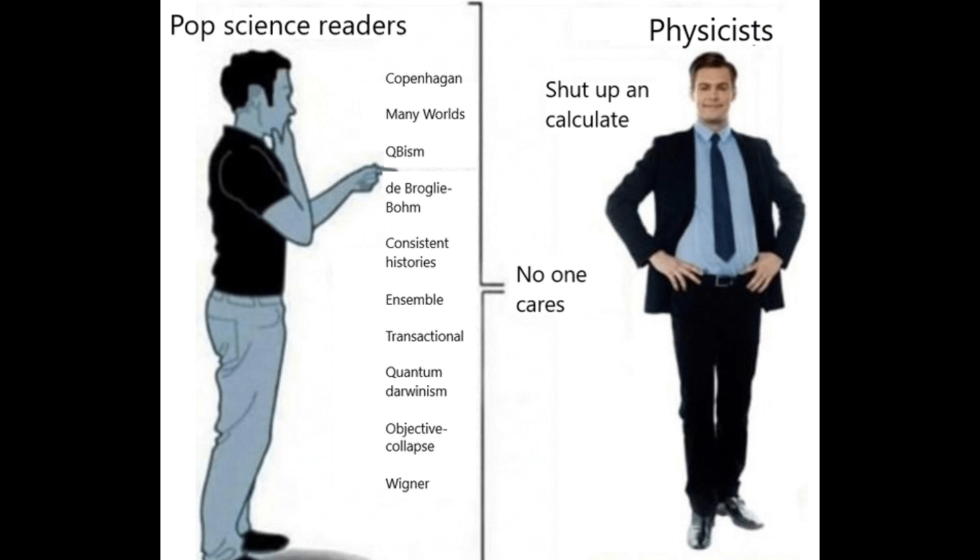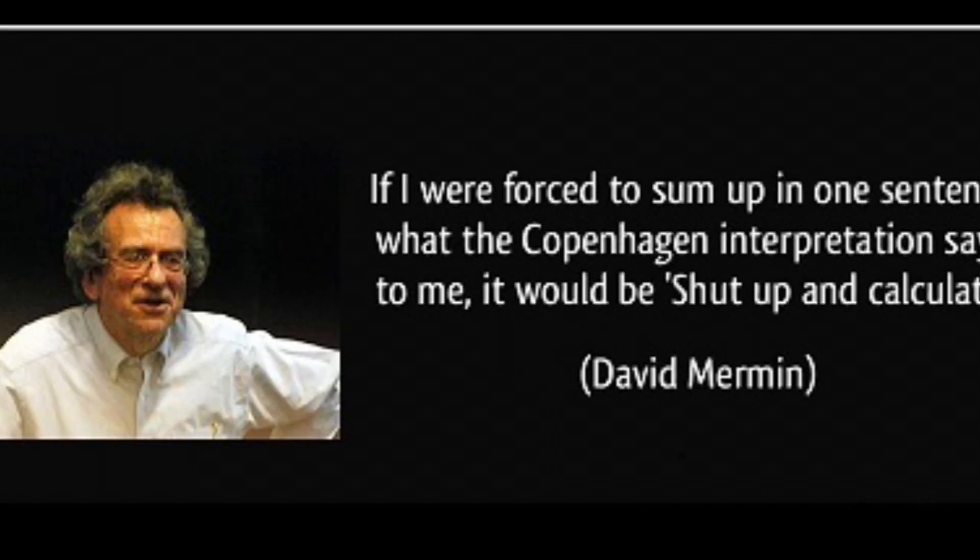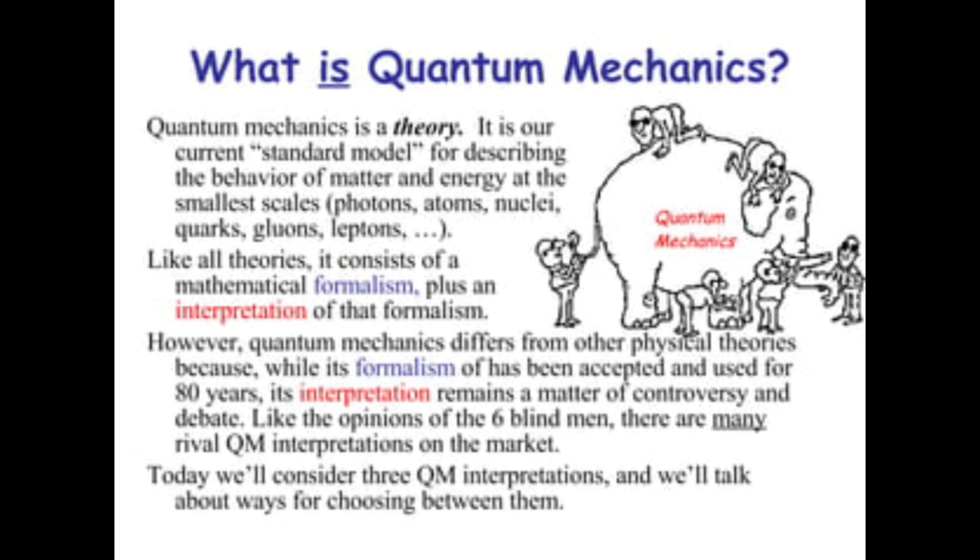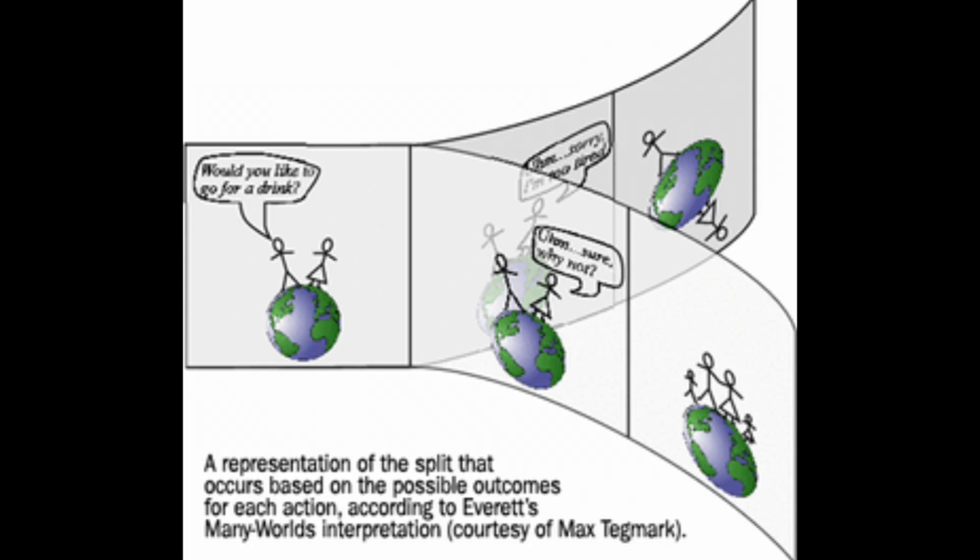Quantum Information and Modern Perspectives. Some modern perspectives, such as quantum information theory, take a different approach by focusing on the concept of information rather than physical realism. This view, which underlies interpretations like QBism (quantum Bayesianism), suggests that quantum mechanics may be a complete tool for predicting observations, but doesn't necessarily describe objective reality itself. This sidesteps questions of hidden variables by reframing the debate around information processing rather than physical entities.